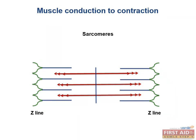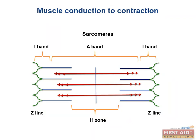The thin actin fibers and thick myosin fibers overlap, always at least to some degree. The M line is simply the midline of the myosin chains. The H zone represents the part of the myosin chains that do not overlap with actin. The I band represents the part of the actin chains that do not overlap with myosin. Where is the H zone the longest? In relaxation. Finally, the A band is the length of the entire myosin chain from end to end. Does the A band change with contraction? No. The A band is always the same.